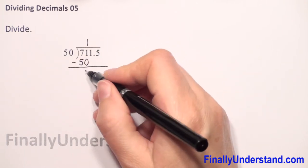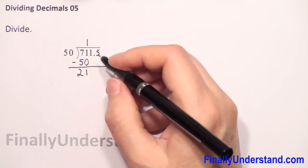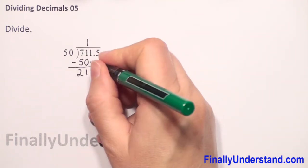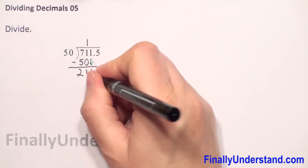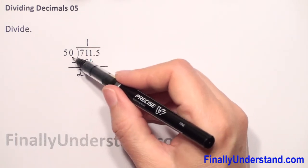Now 1 minus 0 is 1, 7 minus 5 is 2. What next? We have to take down the next digit, 1. We take it down, so it will be 21. And now 211 divided by 50 is 4.